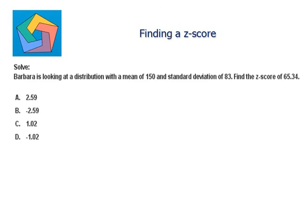Next problem. Solve: Barbara is looking at a distribution with a mean of 150 and a standard deviation of 83. Find the z-score of 65.34. The formula for z-score is given by z-score equals x minus mean divided by standard deviation. So here our x is 65.34, and mean is 150, and standard deviation is 83.